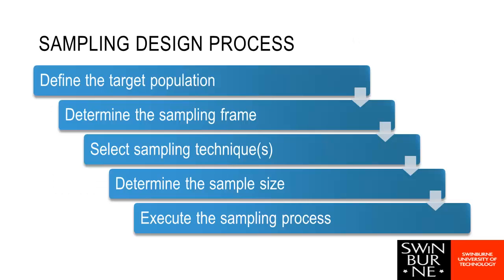Our process for our sample: we will start off by defining our target population — who do we want to find out information about? Then we will discern what we call our sampling frame, which is the people or units that we actually draw our sample from. We choose a sampling technique to choose our particular sample, we work out our sample size, and then we actually go about our data collection.